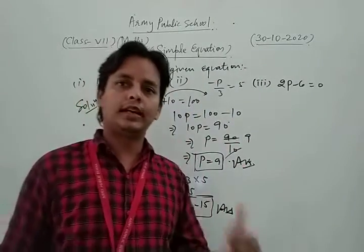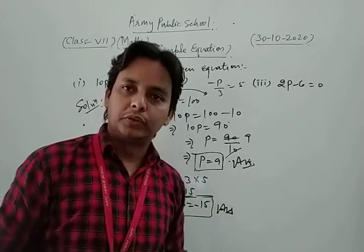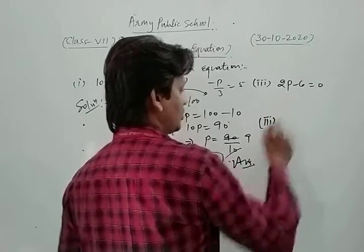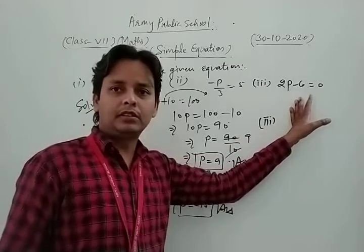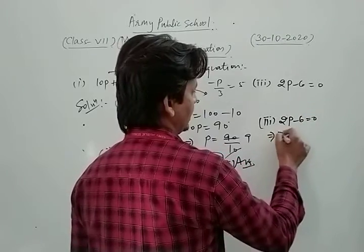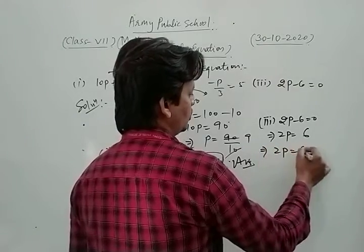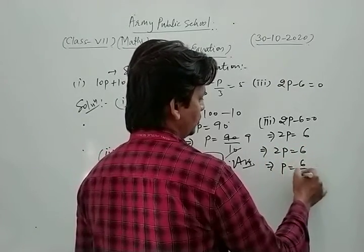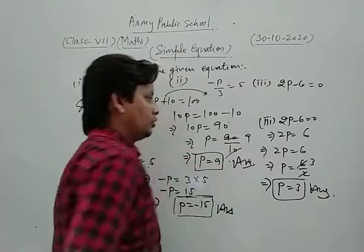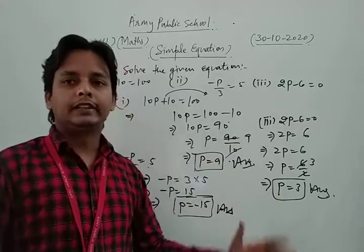In this way, you can solve each and every question of your NCERT exercise based on the solution of simple equations. For the third part, 2p minus 6 is equal to 0: we separate variables and constants, so 2p is equal to 6, therefore p is equal to 6 by 2, which gives the value of the variable p as 3. This is our required solution.